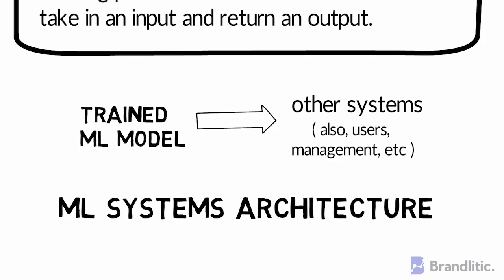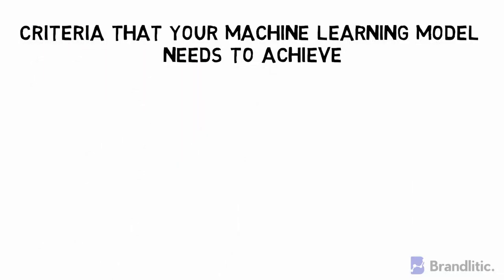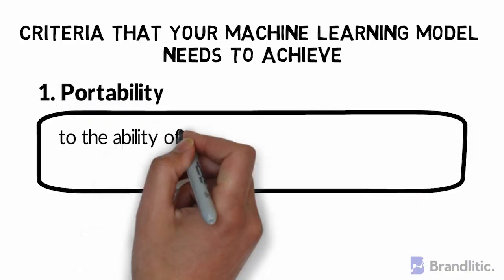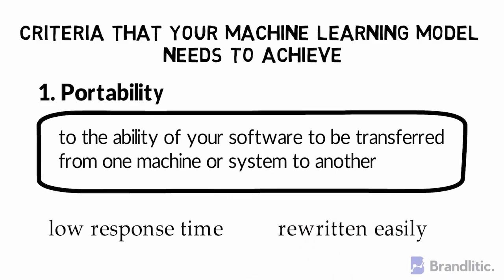Before you deploy a model, there's criteria that the machine learning model needs to achieve before it's ready for deployment. First, Portability — this refers to the ability of the software to be transferred from one machine or system to another. A portable model is one with relatively low response time and one that can be rewritten with minimal effort.